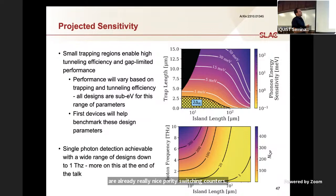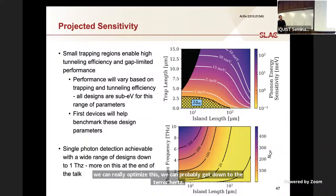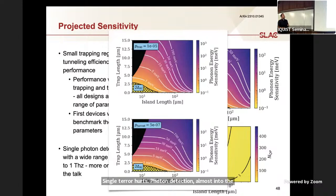We're just relying on the fact that transmons are already really nice parity switching counters. We're also looking at doing this with photon detection. This shows the number of quasi particles you detect per absorbed photon as a function of photon frequency. We're trying to go down into this terahertz range. For the high frequency photons, not a hard sensing problem. If we can really optimize this, we can probably get down to the terahertz, single terahertz photon detection almost into the gigahertz range. This shows some of the variation if you make some more pessimistic assumptions for tunneling and trapping rate. You get closer to an EV in both cases, but we're optimizing for geometries in this area.